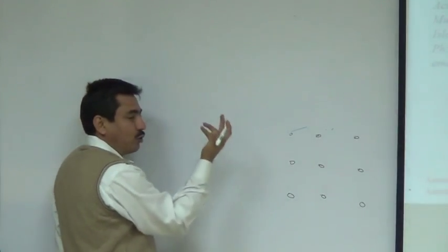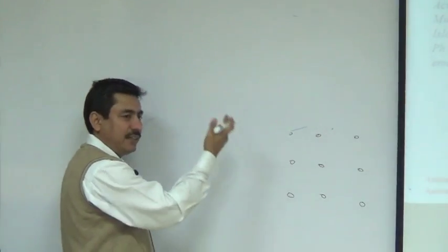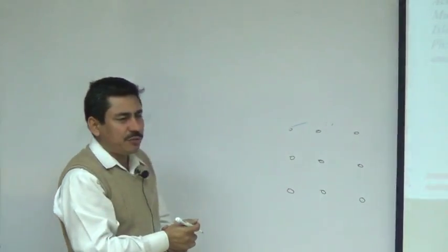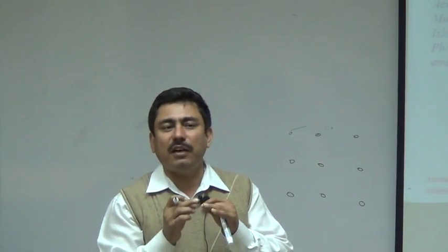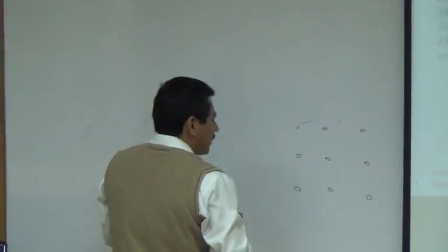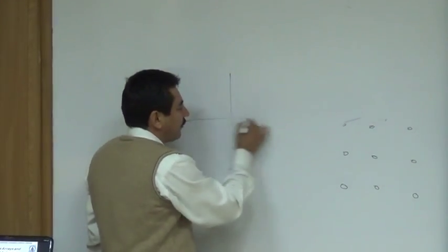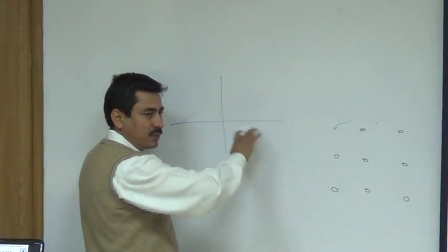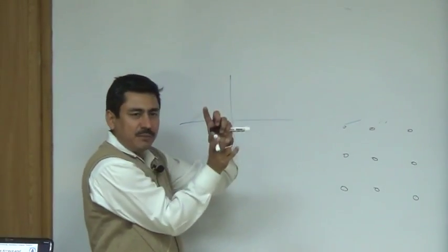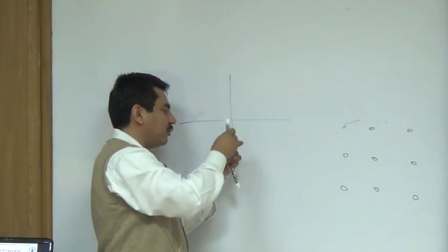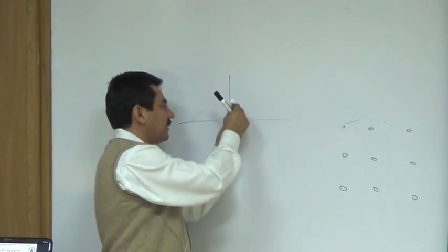We have two fields — one is the E field and one is the H field. H field and E field are both three-dimensional. If we have three-dimensional fields, it means the plot will be along theta or phi. If we plot the power pattern as an azimuth power pattern only, then it will be two-dimensional.